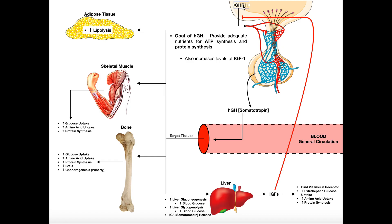It's also worth noting there's another inhibitory hormone called growth hormone inhibiting hormone, or GHIH, which can also exert a similar effect to IGFs — it will actually inhibit the release of growth hormone. So this video gave you a comprehensive look at what growth hormone is doing: making sure the blood has plenty of circulating nutrients, increasing the ability of cells to uptake those nutrients, which allows them to make more ATP and have more protein synthesis. Growth hormone also stimulates the liver to release insulin-like growth factors, which have similar effects on all sorts of other cell types.